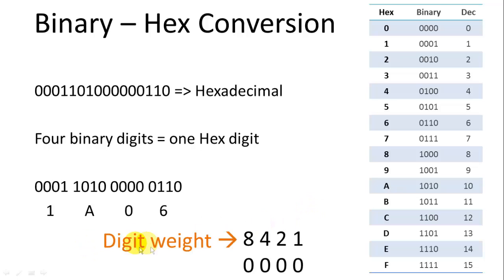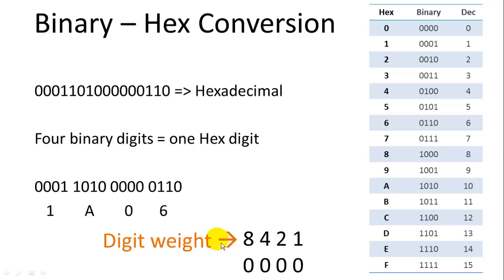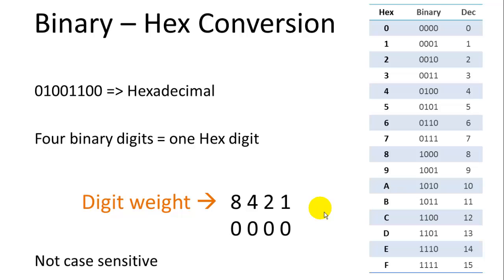Another way to look at it is digit weight. The first bit in a 4-bit group is valued at 1, the second at 2, the third at 4, and the fourth at 8. So you can compute: 0110 is 4 plus 2, which is 6. When you reach 10, you start with A — 11 is B, and so on. In this video you won't have to do any conversion; I just wanted to give you this as background information.